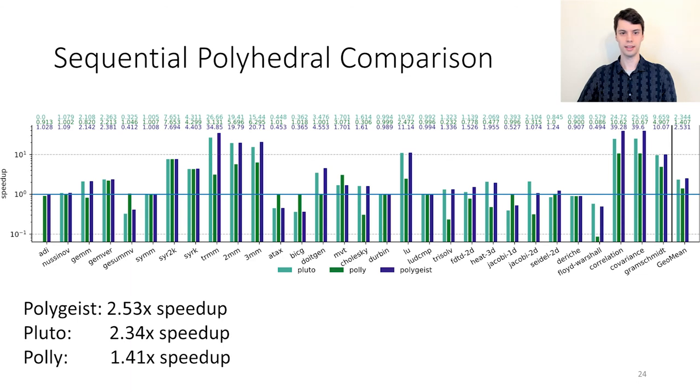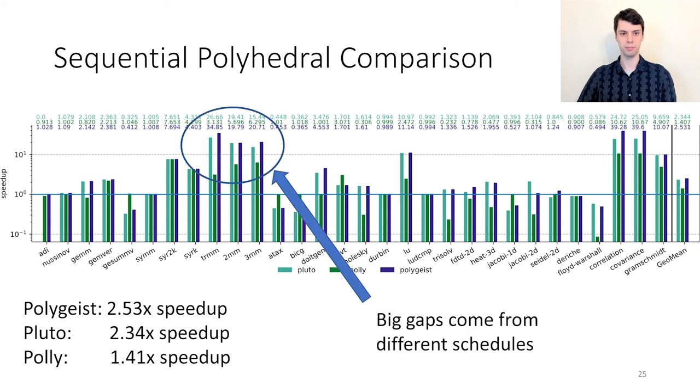Let's now take a look at the sequential polyhedral comparison. On average, when compared to vanilla Clang, Polygeist has a 2.5x speedup, Pluto has a 2.3x speedup, and Polly has a 1.4x speedup. The big gap between Polly and the other tools occurs because it uses a different scheduler. Even when using the same scheduler, Polygeist can select a different statement set, and therefore a different schedule. This is because Polygeist extracts statements as opposed to using the original C code.